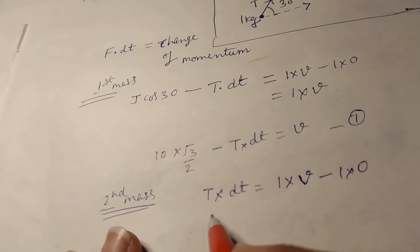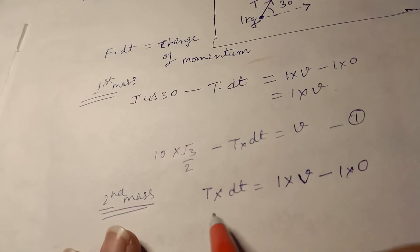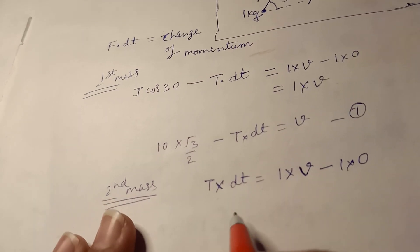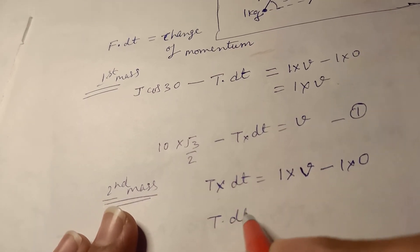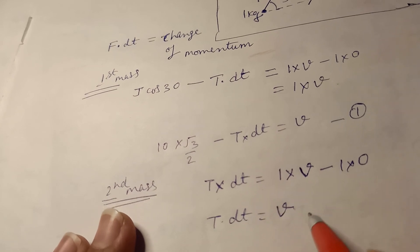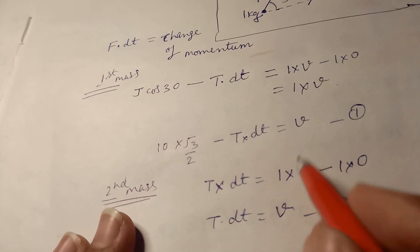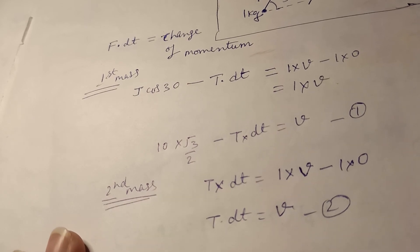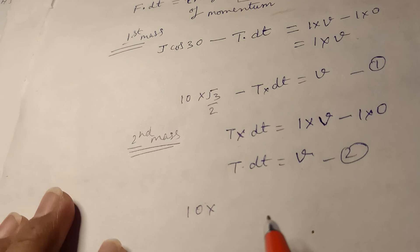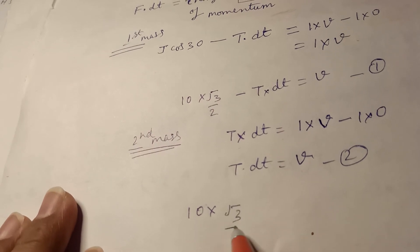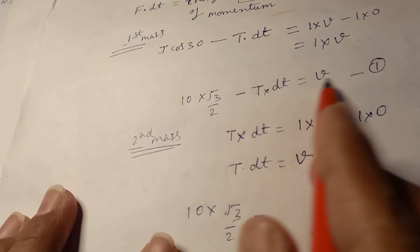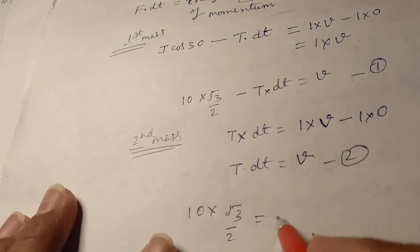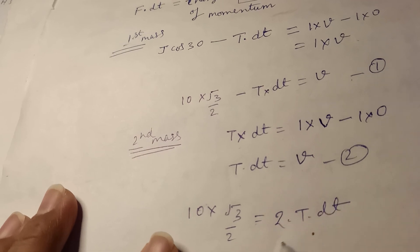T dt is equal to V. This is the second equation. Substituting V's value, 10 into root 3 by 2 equals T dt plus T dt. From the other equation, we get 2 times T dt.